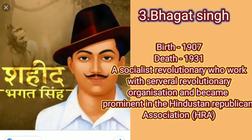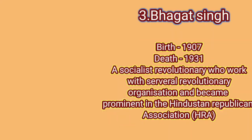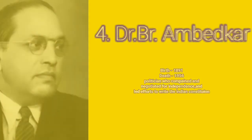3. Bhagat Singh. Birth: 1907, death: 1931. A socialist revolutionary who worked with several revolutionary organizations and became prominent in the Hindustan Republican Association, HRA.